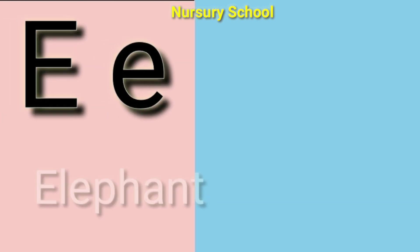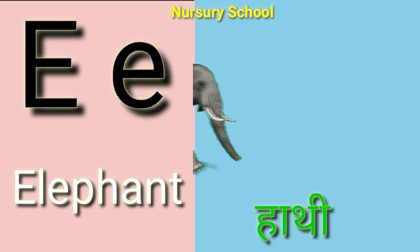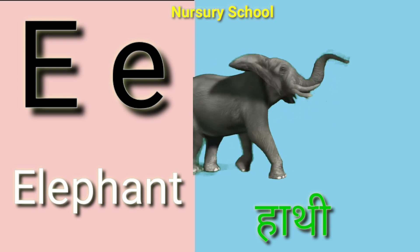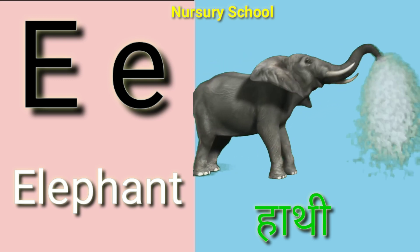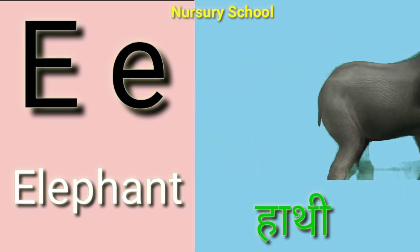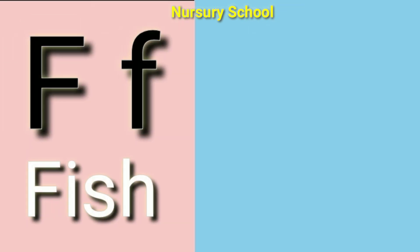E for elephant, elephant means hathi. F for fish, fish means machli.